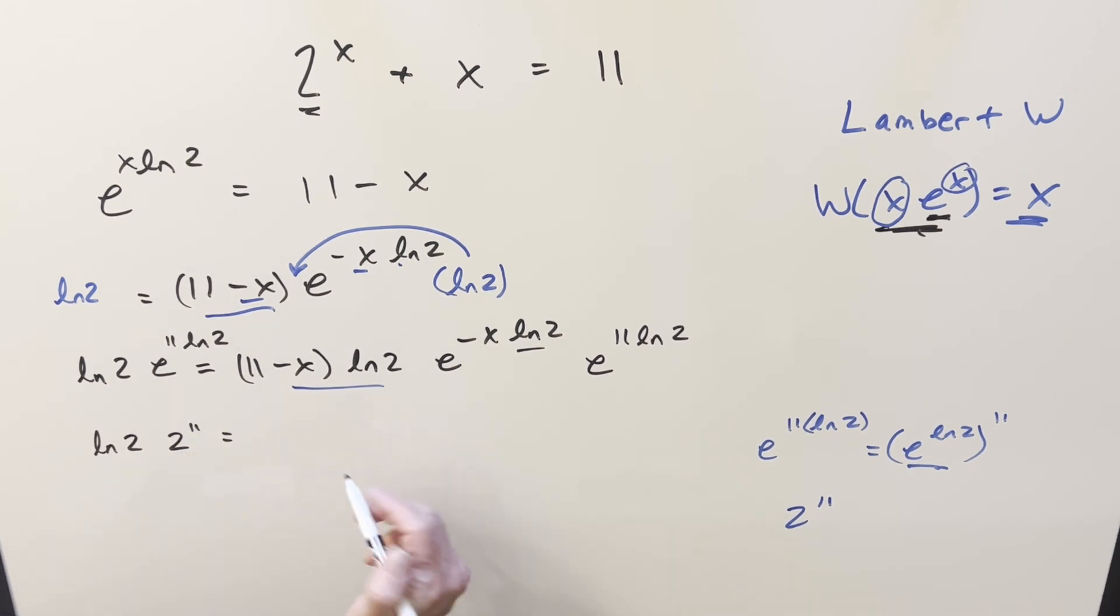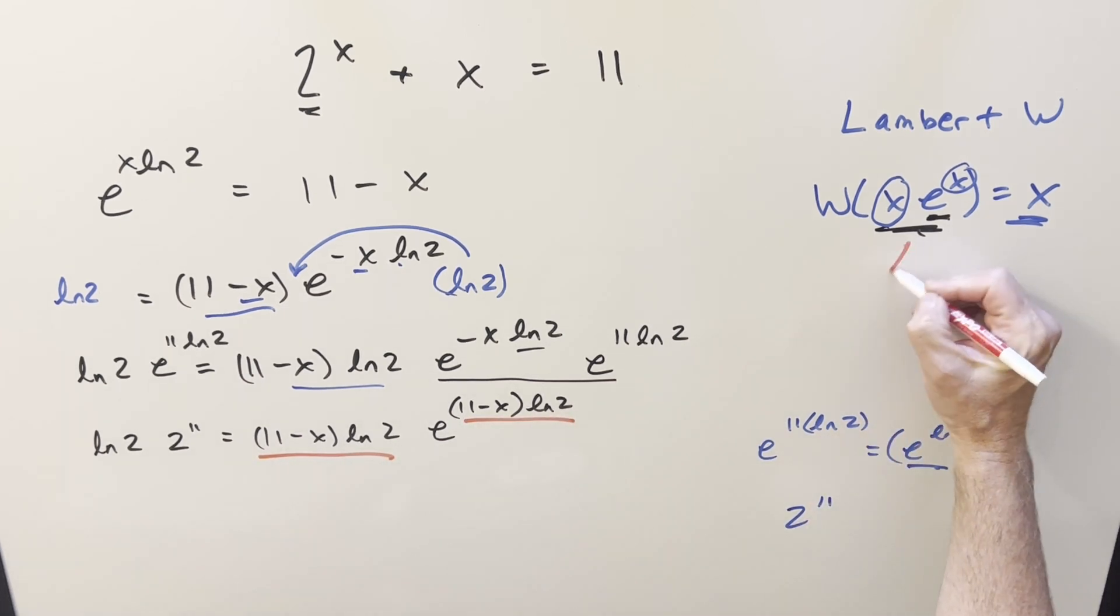Rewriting all this stuff, 11 minus x ln 2. Now here, when we multiply this stuff together, I can add the exponent. So I can write this as e to the 11 minus x ln 2. And so what we have here, we've achieved the formula because our exponent coefficient match, and we just can pull out this. So what I need to do here is just apply the Lambert W function on both sides.